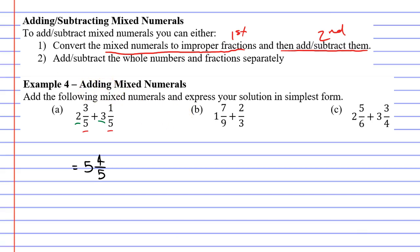Moving on to question B, it's going to get a little tougher. Looking at our fractions first, we've got seven over nine plus two over three. They have different denominators, but I can take the fraction two over three and multiply both the numerator and denominator by three. Two times three is six and three times three is nine, so now I have two fractions with the same denominator.